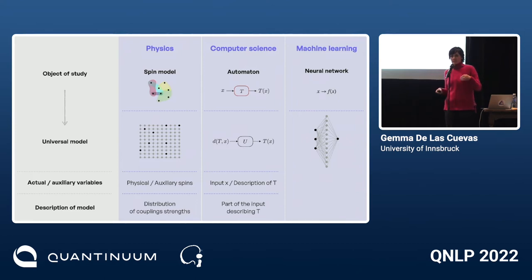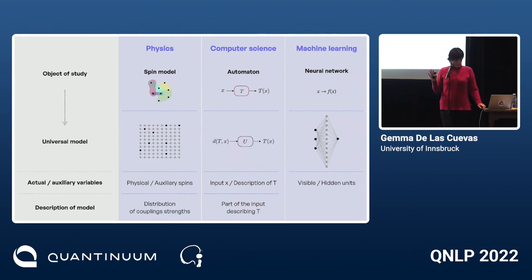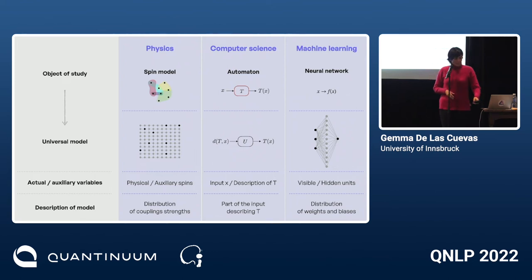In this case, it seems to be a statement about denseness, and there's something of a basis of a vector space going on. We also have visible and hidden units and a distribution of weights and biases — they all seem similar.